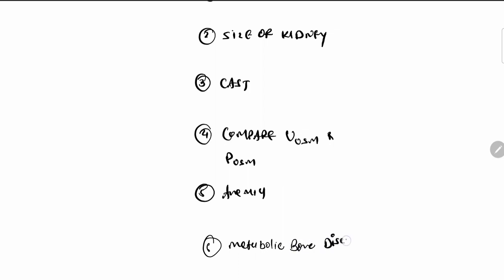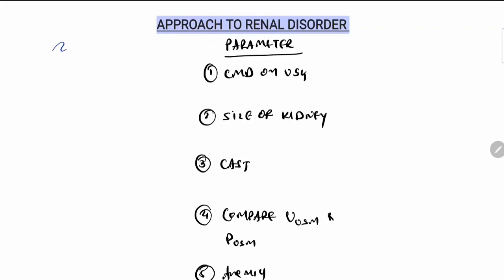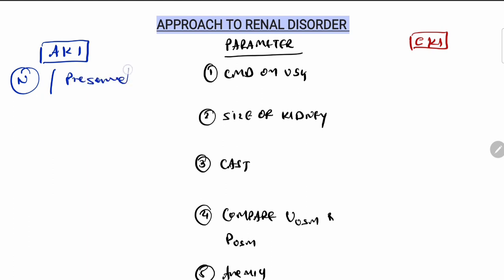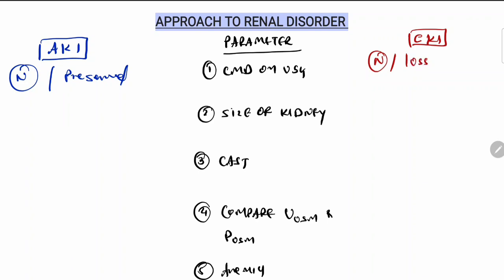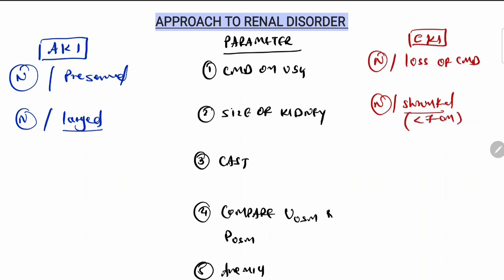Now comparing acute kidney injury and chronic kidney injury: in corticomedullary differentiation, AKI shows normal or preserved differentiation, while CKD shows loss of corticomedullary differentiation. For kidney size, in AKI it is either normal or enlarged, while in CKD it is shrunken at less than 7 centimeters, compared to normal which is more than 11 centimeters.